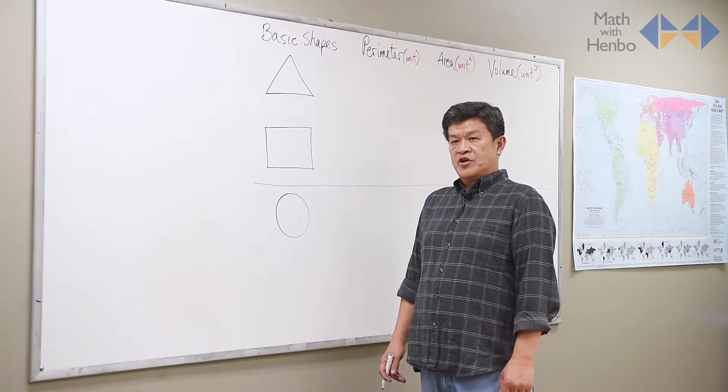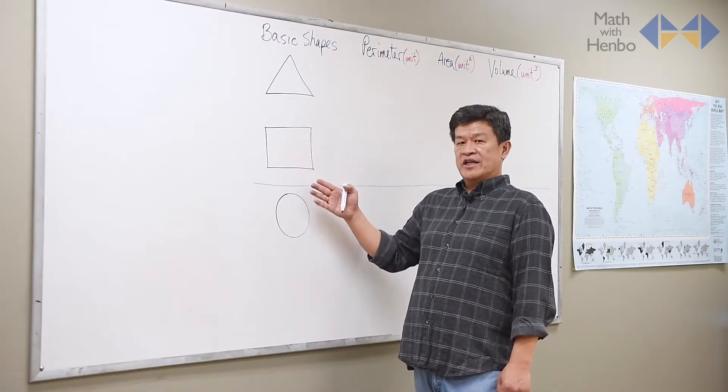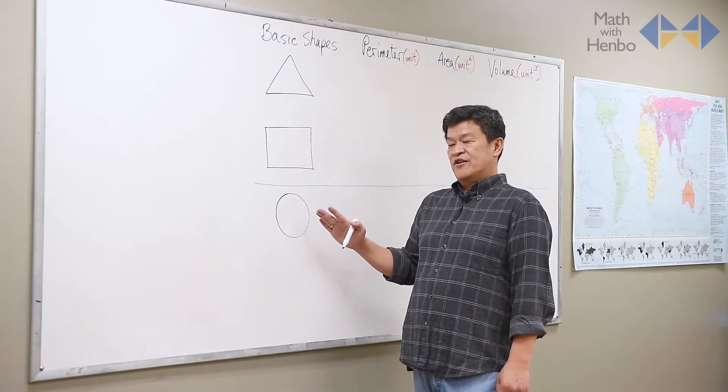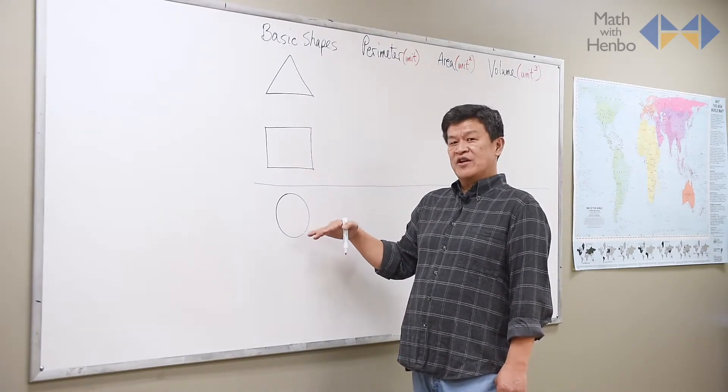When it comes to geometry, there are three basic shapes: triangle, rectangle, and a circle. Because circle is a different beast altogether, I will leave it until the end.